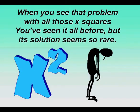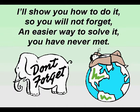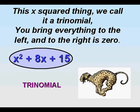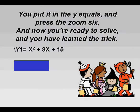When you see that problem with all those x-squares, you've seen it all before, but its solution seems so rare. I'll show you how to do it, so you will not forget. An easier way to solve it, you have never met. This x-squared thing, we call it a trinomial — you bring everything to the left, and to the right is zero.